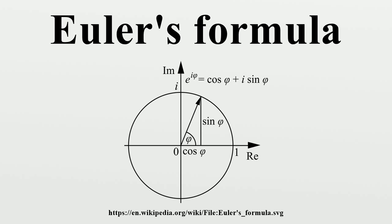A point in the complex plane can be represented by a complex number written in Cartesian coordinates. Euler's formula provides a means of conversion between Cartesian coordinates and polar coordinates.